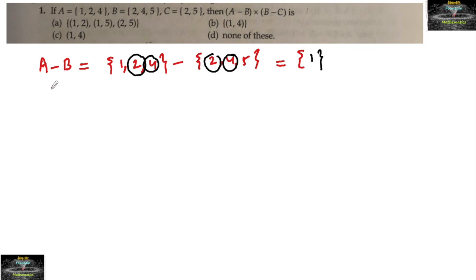B-C is {2, 4, 5} minus {2, 5}. The elements which are common here are 2 and 5, so the leftover element is only 4. Therefore, B-C is {4}.